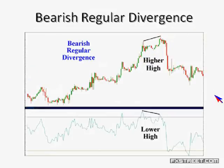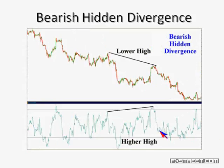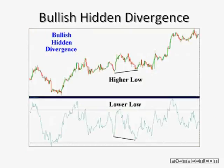Let me review: Bearish regular divergence — higher high in price, lower high in the oscillator, loss of upside momentum, looking for a downside move. Bullish regular divergence — lower low in price, higher low in the oscillator, loss of downside momentum, looking for a potential move to the upside. Bearish hidden divergence — lower high in price (downtrend), higher high in the oscillator, looking for a continuation of the downtrend. Bullish hidden divergence — higher low in price, lower low in the oscillator, looking for a continuation of the uptrend.